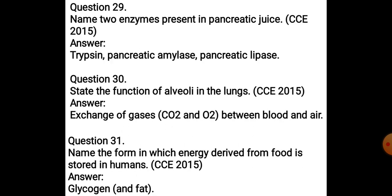Name two enzymes present in pancreatic juice. Those are trypsin, pancreatic amylase, and pancreatic lipase — these are the three enzymes, and you can write any two if only two are asked. Next: State the function of alveoli in the lungs. Alveoli are meant for the exchange of gases — that is carbon dioxide and oxygen — between blood and air.